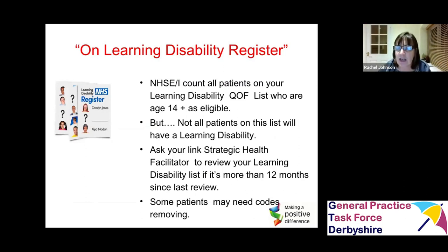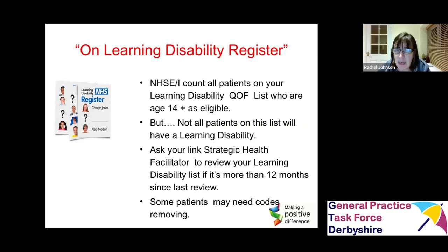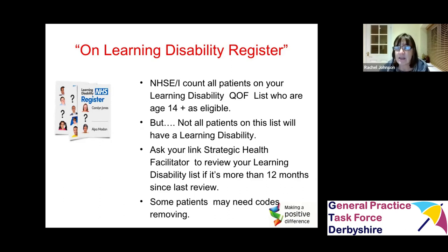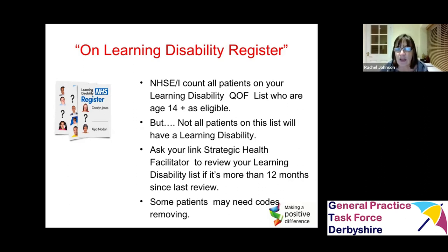This has changed in the last twelve months or so. NHS England, for the purposes of counting people, counts everybody on the COIF list who is aged 14 and over as being eligible for the health check. But not everybody on those COIF lists will have a learning disability — some will have learning difficulties as previously described — so we want to narrow that list down to only those people that are eligible.